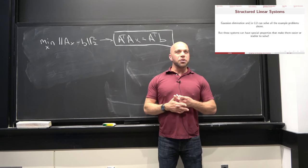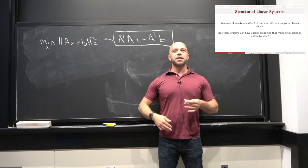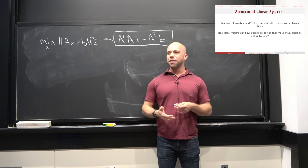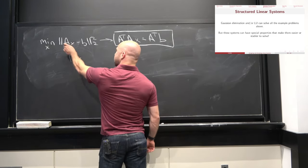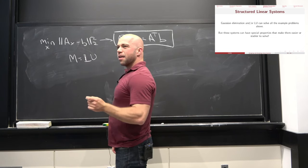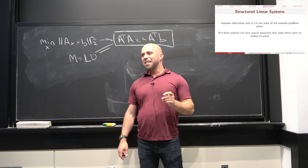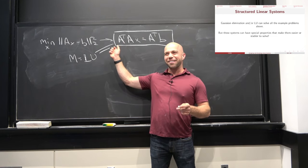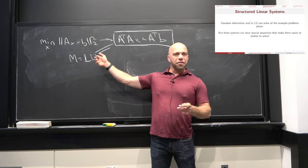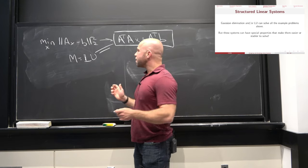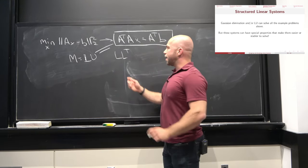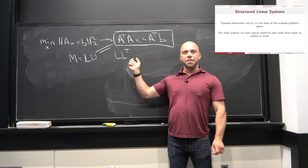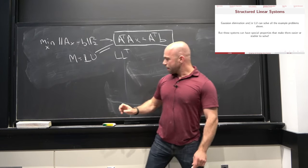Now, the question we're going to answer today is: can we do better than that — either from a numerical stability perspective, efficiency, or both? What we did last time was factor matrices as a product of a lower and upper triangular thing. But notice if I set LU equal to A^T A, spiritually this feels wrong — because A^T A is a very nice, symmetric matrix, but LU doesn't look symmetric. That's our clue that maybe we can do a little better.